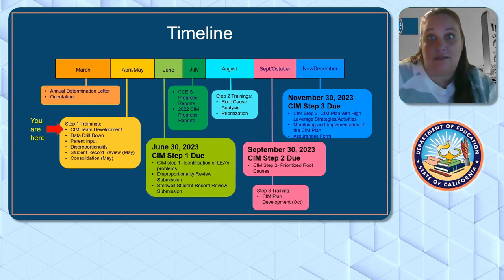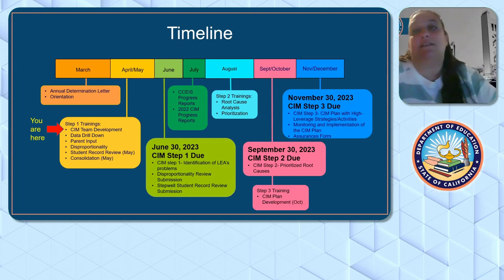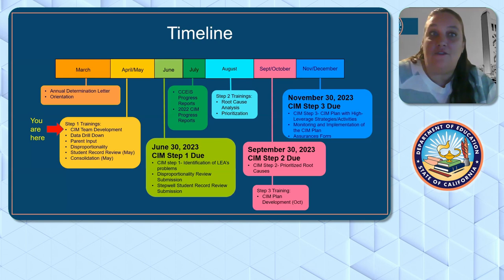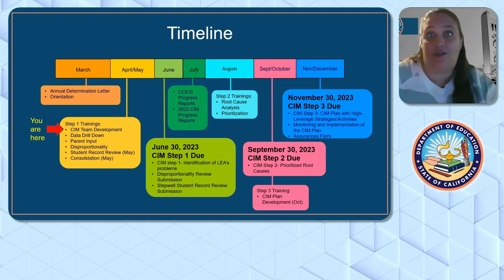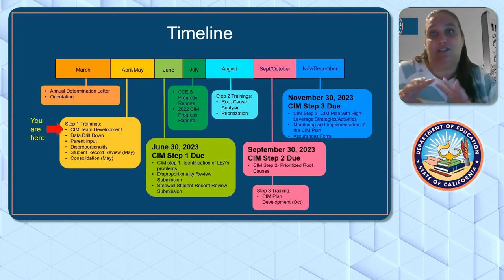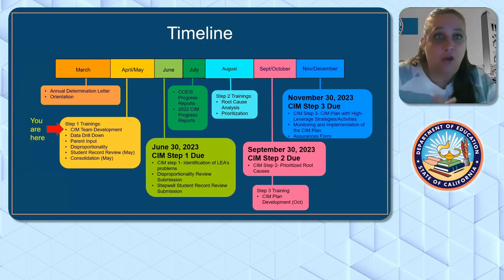Question: We were level two last year and completed all of the yellow activities, and now we're level three. Do we have to repeat these activities? If you were a level two last year and developed a SIM plan, reach out to your CDE consultant. The issue is that it's different data, so you need to see if your SIM plan from last year still reflects the targets you're working on this year. Before going through all this process again, reach out to your consultant, review your previous plan, and see if it's something you can keep adjusting, revising, monitoring, and implementing, or if the data is so different that you need to develop a new plan.